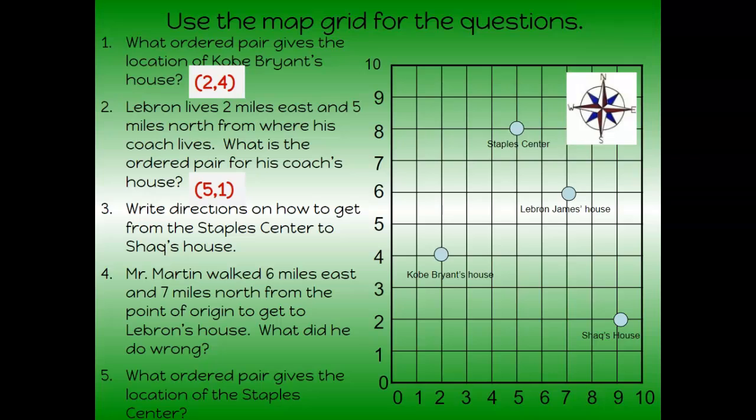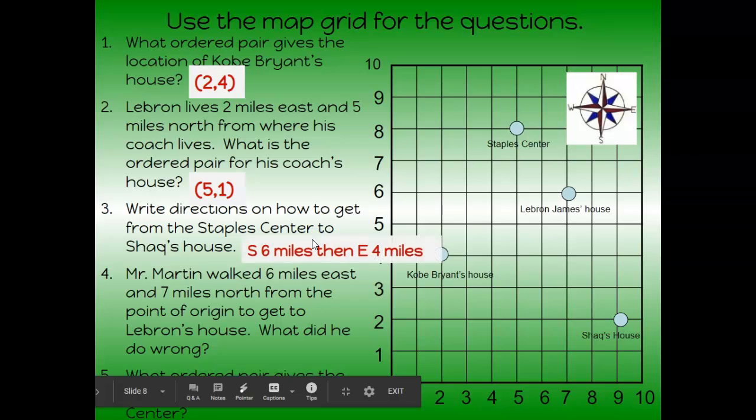Okay, you should have written down something. Let's see if you did this right. So Staples Center to Shaq's house. Well let's see, I need to go south. So one, two, three, four, five, six miles south. And one, two, three, four miles east. Okay, so you should have written six miles south, then east four miles.